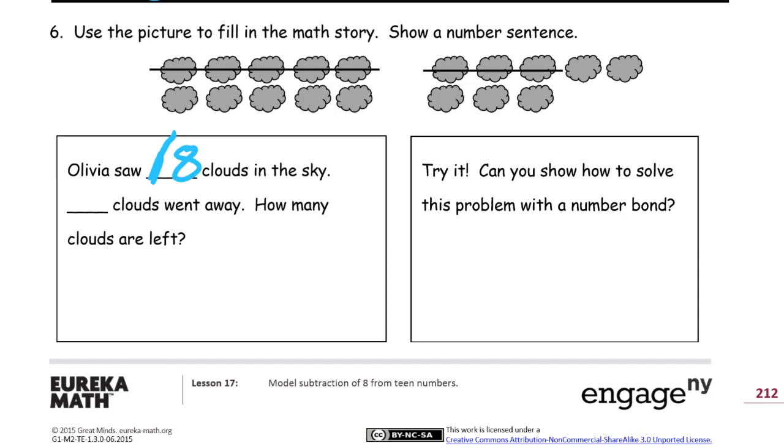And how many are crossed out? It looks like 8 are left. 8 are crossed out. And how many are left? There's the bottom 8 and 2 more. There are 10 left. So it's 18 minus 8 equals 10. There's the number sentence.